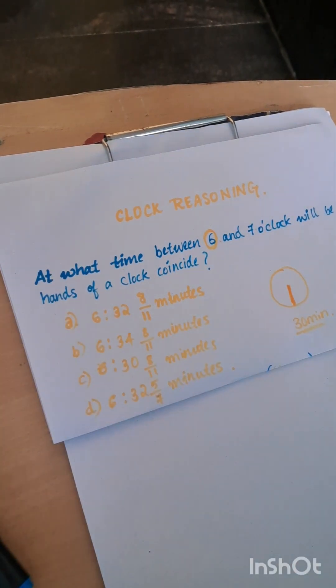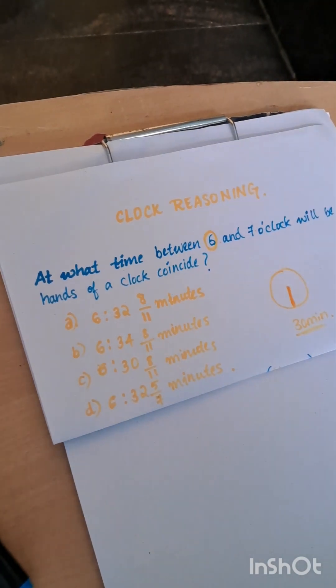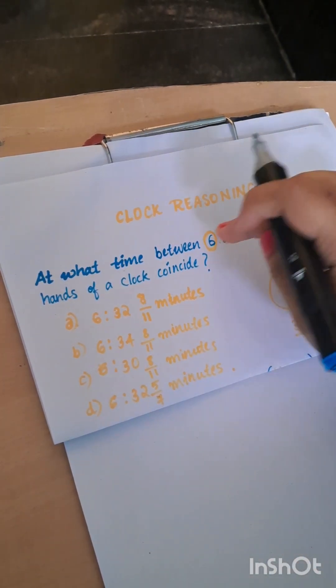The first one I will tell you using the formula, and the second one using a trick. So now we have understood that it is 30 correct. Now the formula is whatever number is given here, they have asked between 6 and 7, so 6.